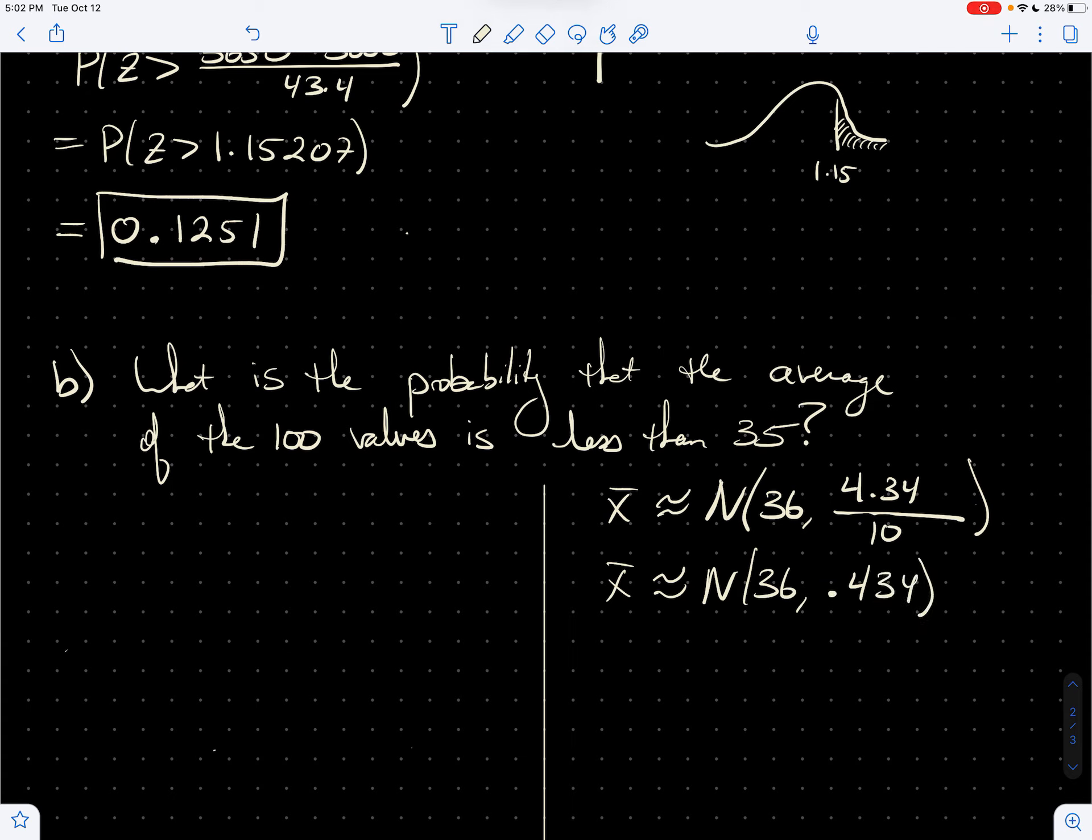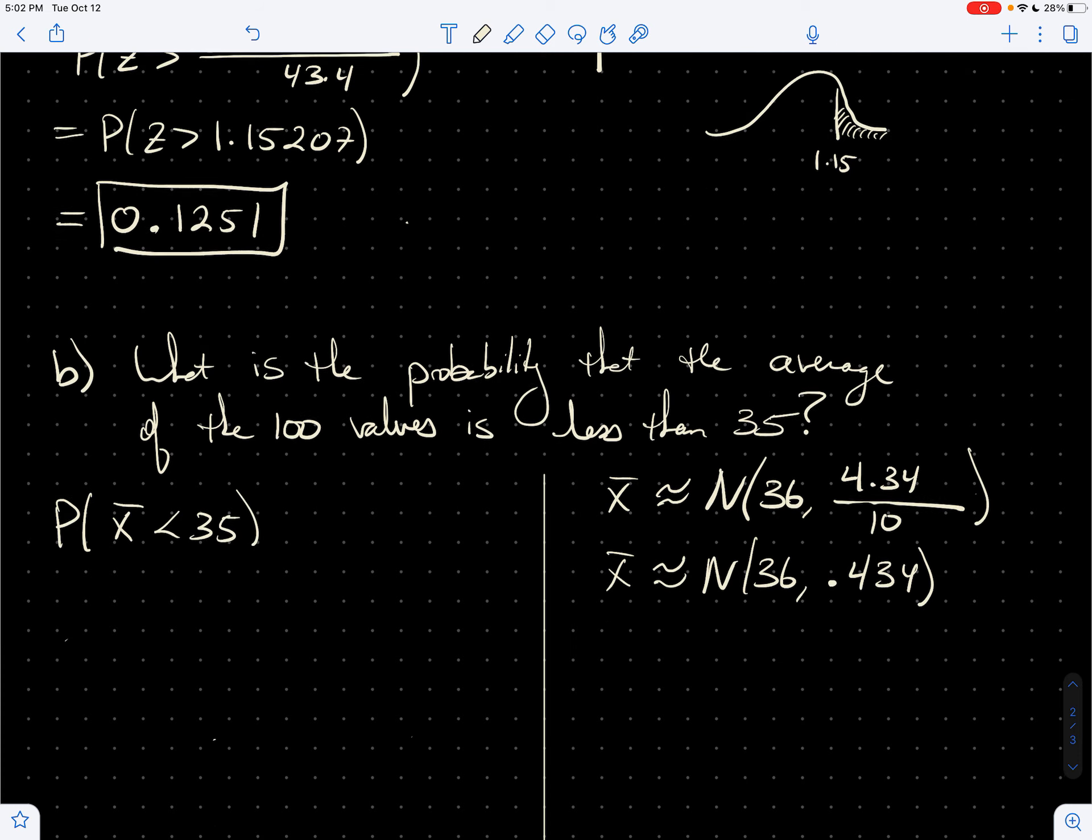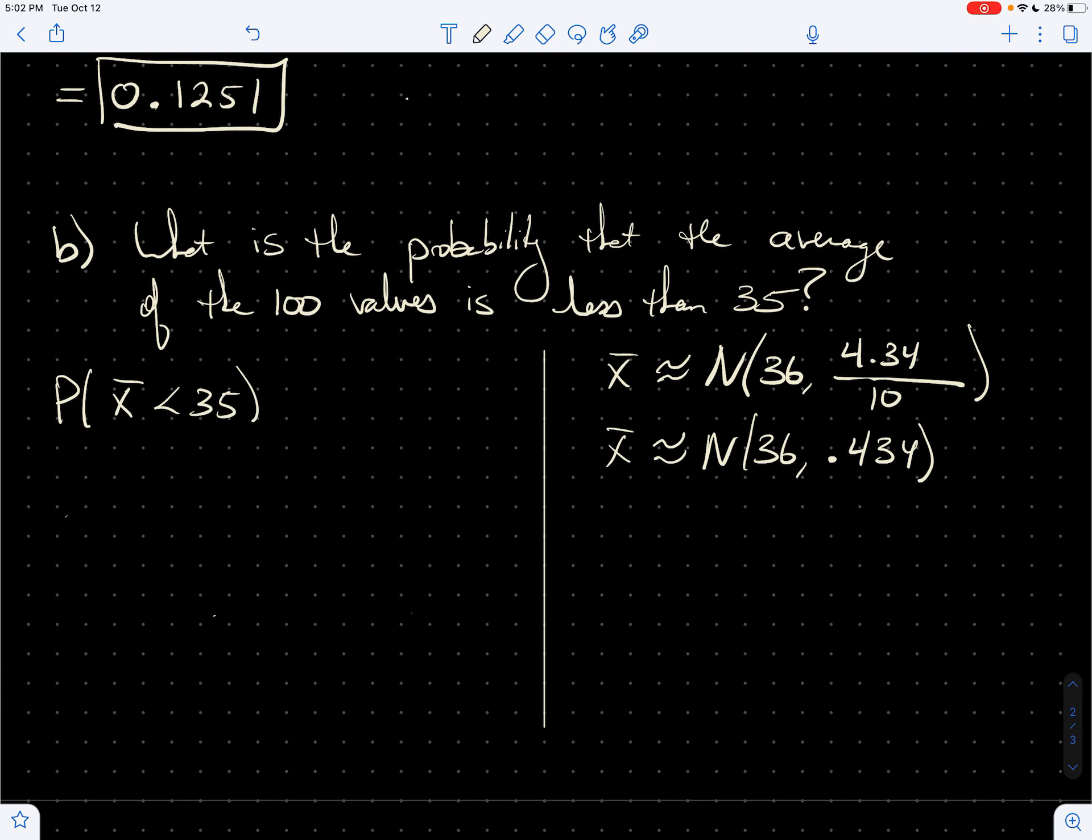And once I know that, then I can write down the question that I want. I want the probability that X bar, the average, that's where I'm getting X bar from, of the 100 values is less than 35. And to be able to compute that, again, I can standardize. This is just,